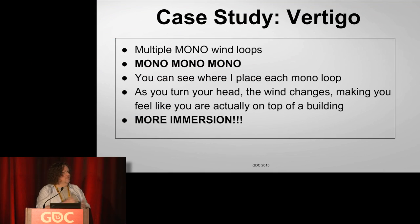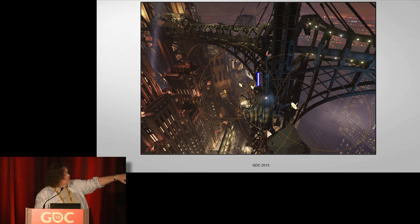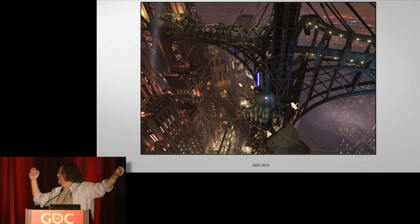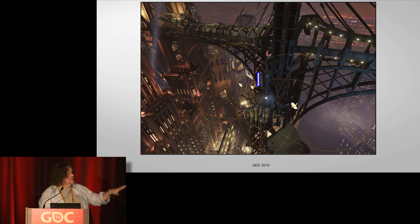For vertigo — we have a demo where you're standing on the edge of a building and a lot of people freak out, white-knuckling it. We use a lot of mono loops. There are two mono wind loops, one in front of you and one behind, plus a small wind loop in the center. As you turn your head, it sounds like wind's rushing around you. When you go to the edge and look down, the wind sounds like it's rushing up in your face. This is a simple way of showing how we have to build ambiences in VR — it's not stereo loops anymore.